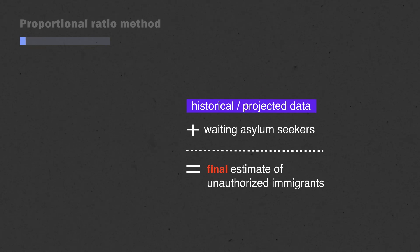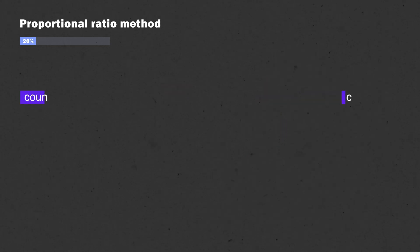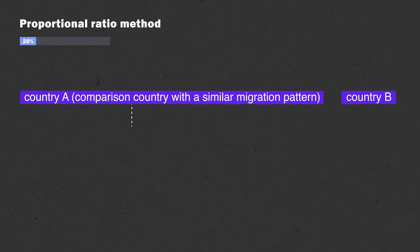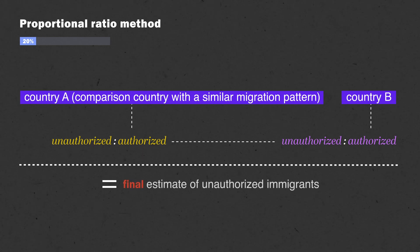For the proportional ratio method, we looked at estimates from a comparison country where the other methods were successful, took its ratio of unauthorized immigrants to authorized immigrants, and applied that ratio to the country at hand.